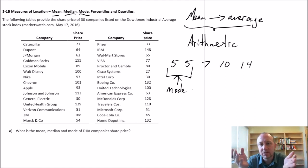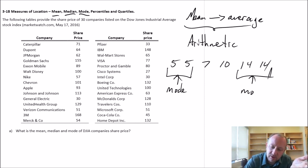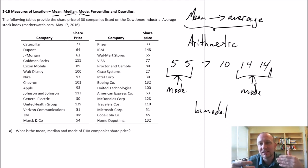So it is possible to have one mode. If I had another 14, I could have two modes and we would call this bimodal. If I had another 10—two fives, two tens, two fourteens—then we would call it multimodal. We can have really any number of modes.